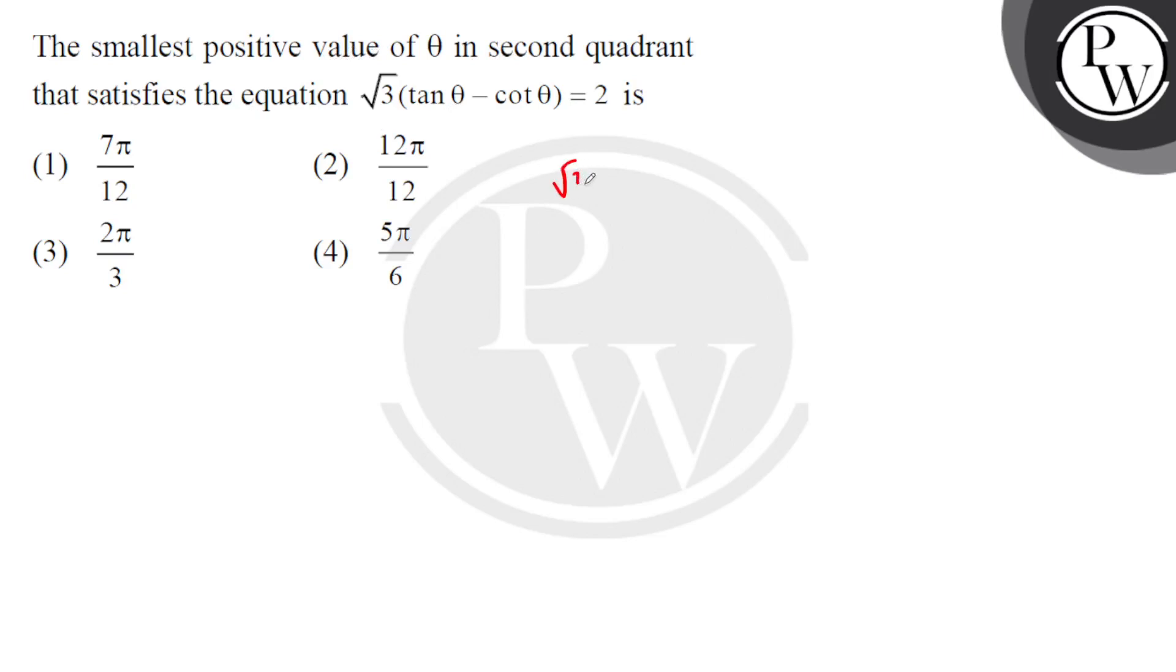Root 3 times tan theta minus cot theta equals 1 upon tan theta, and that equals 2. So here I have root 3 times tan theta minus 1, and that equals